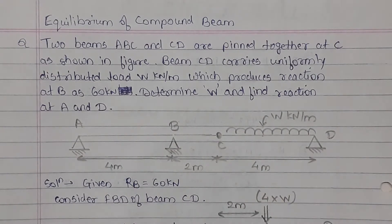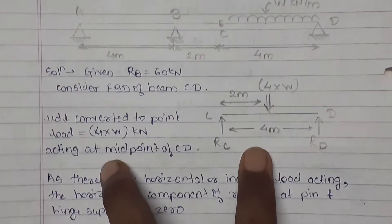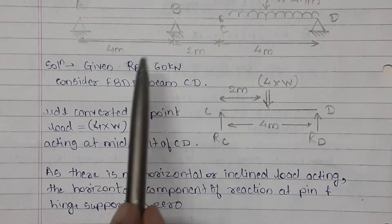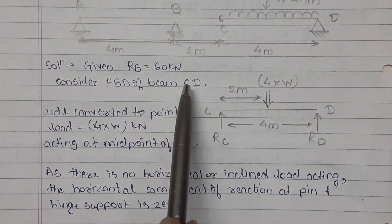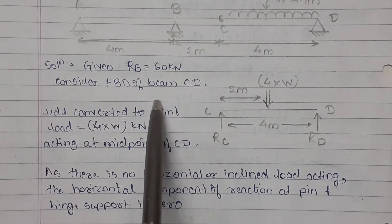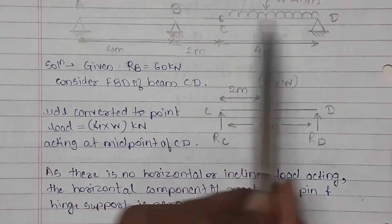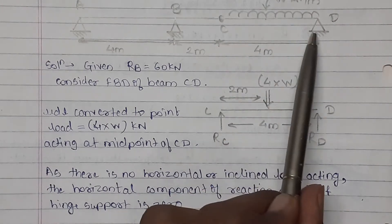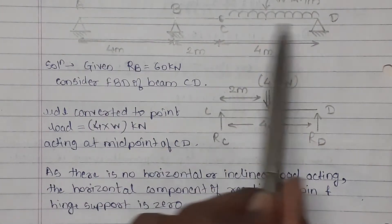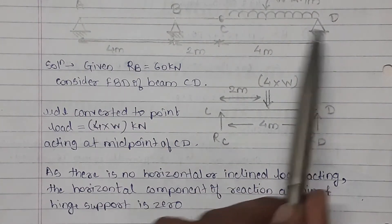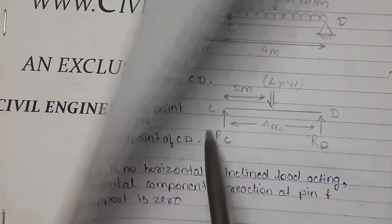These are hinge supports. In the question, given is reaction at B, that is RB equals 60 kN. We will first consider the beam CD part. This is a compound beam, so we will consider the individual beam first and we will apply condition of equilibrium on this beam.